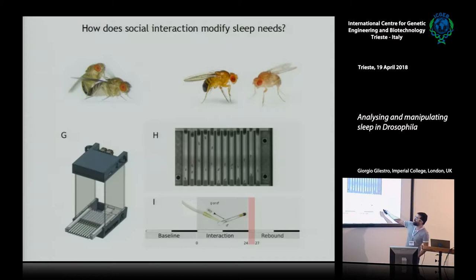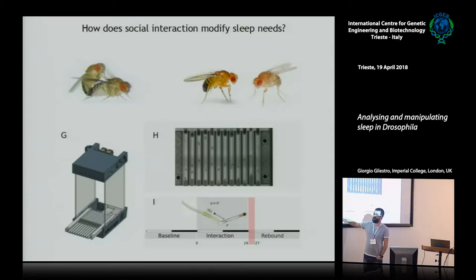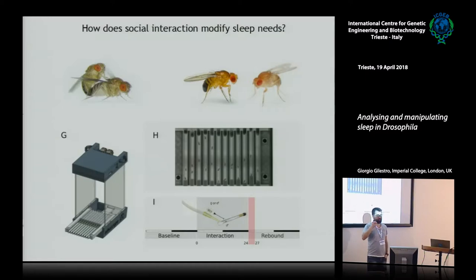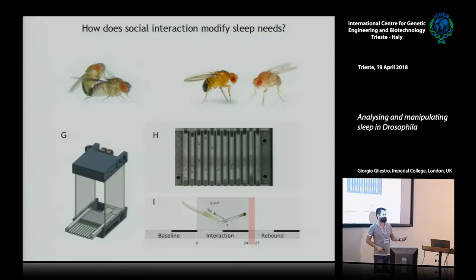The experiment is done by putting a naive fly in a tube. When we want to achieve real naivety, we put the pupa inside the tube so that the flies are actually born into the tube — the tube is their whole world. They record sleep for a baseline period, and then on interaction day, we gently insert an intruder into this tube. The intruder can be another male or a virgin female.